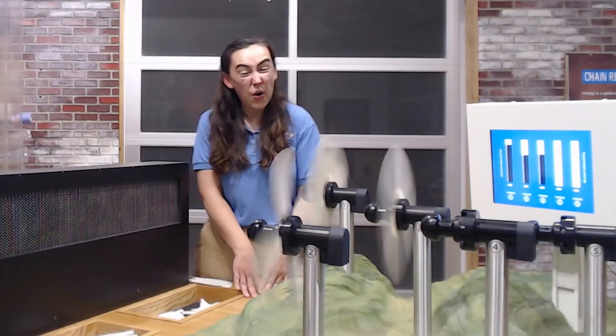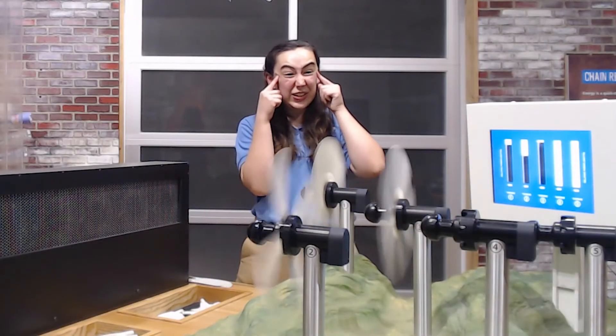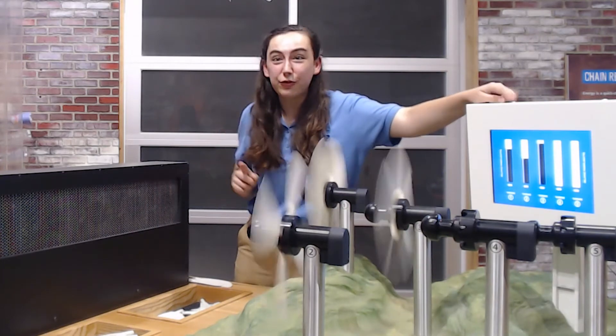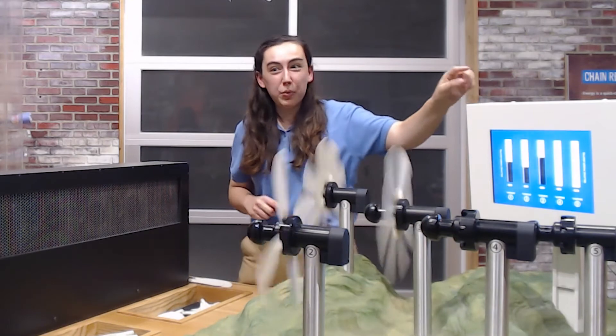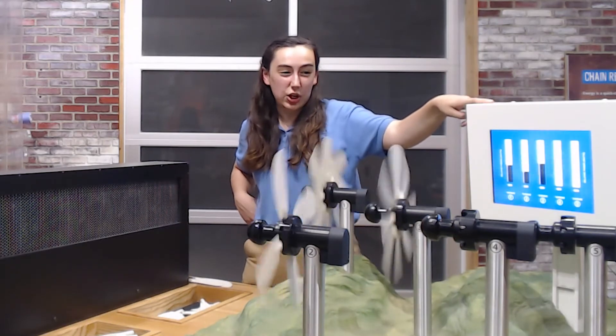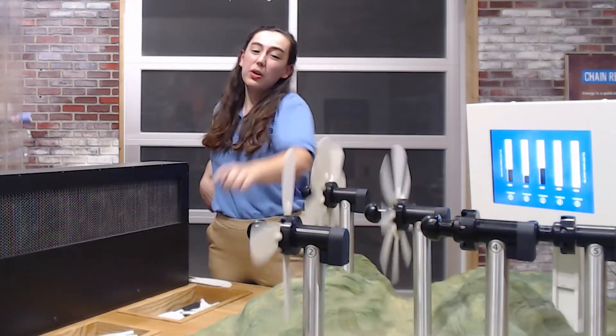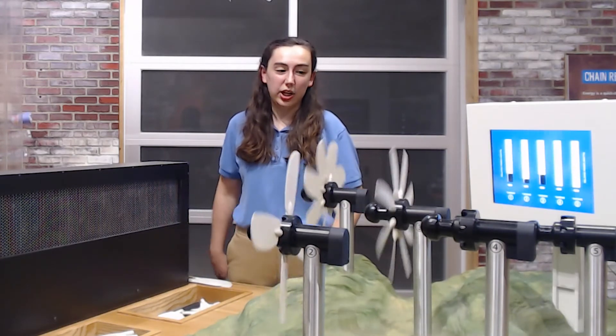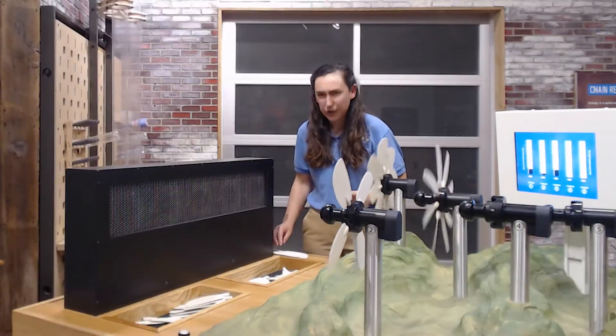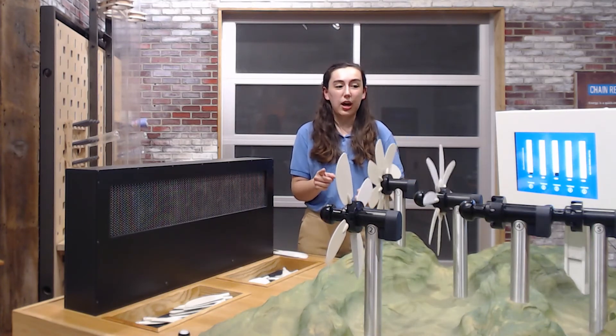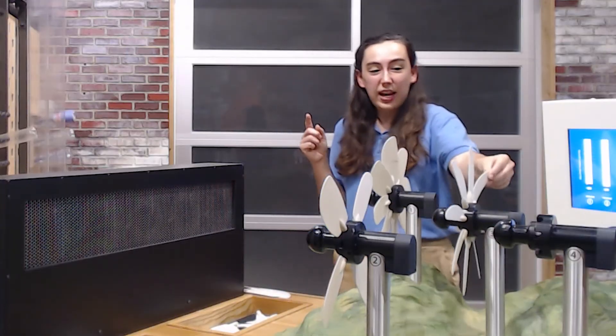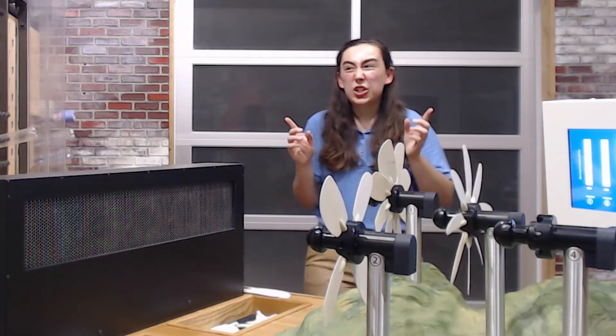So if you saw really closely, number three was the first to reach the max energy. Then number one reached the max energy and then number two was the slowest at generating that max energy. So why do you think number three works so much better than number one and number two?